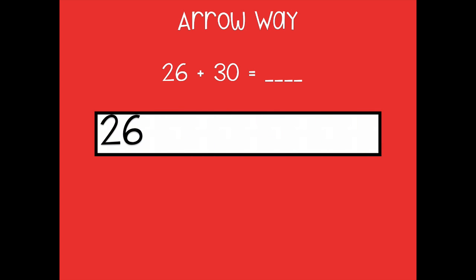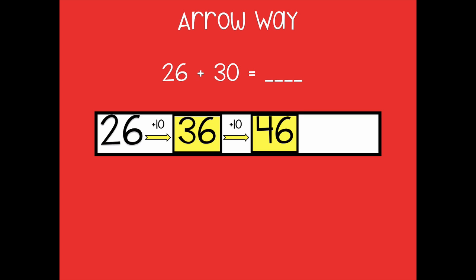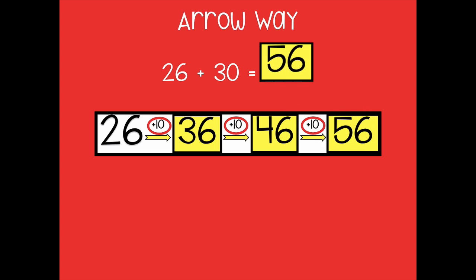Using the arrow way, I'm going to start with 26 and break that 30 up for easier addition. So I could start with plus 10: 26 plus 10 is 36. I could add another 10 — friends, what's 36 plus 10? 46. Now I need 10 more because I've only added 20 so far. So 46 plus 10 is 56. Look — 10, 20, 30 — that's how I added 30. So 26 plus 30 equals 56.